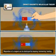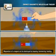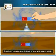Magnetism of a magnet can be destroyed by tapping, hammering, heating, etc.